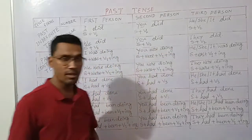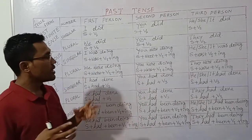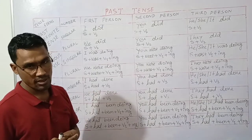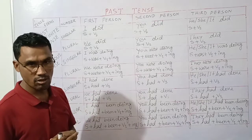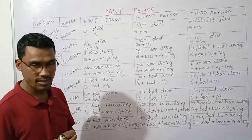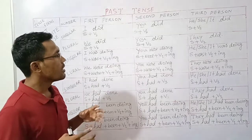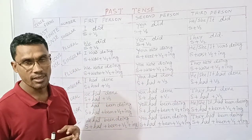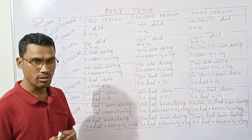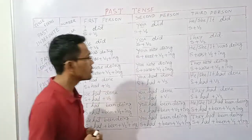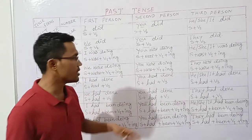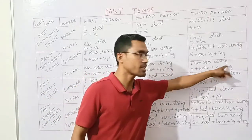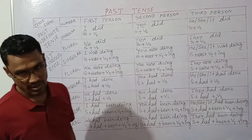For third person singular 'he/she': subject plus 'was' plus verb plus '-ing' plus object. For third person plural 'they': 'They were doing their homework.' The general structure for past continuous is: subject plus 'were' plus verb plus '-ing' plus object.